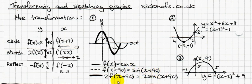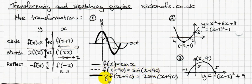Sometimes you times the whole function by 2, written as 2f(x). So if f(x + 90) = sin(x + 90), then 2f(x + 90) = 2sin(x + 90). That's an overview of how functions work.